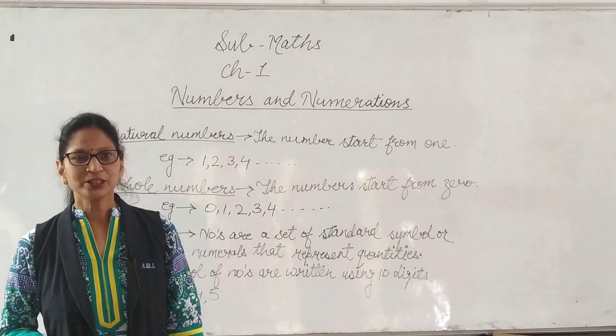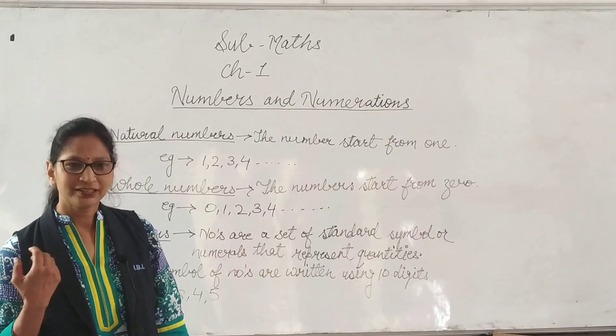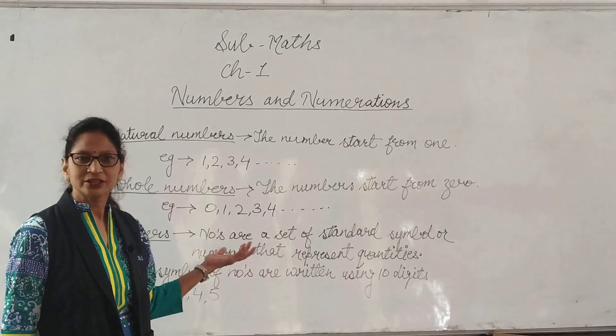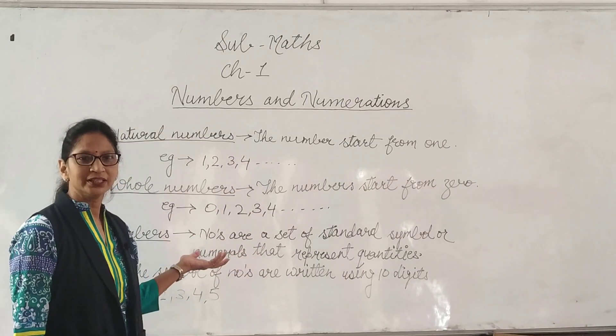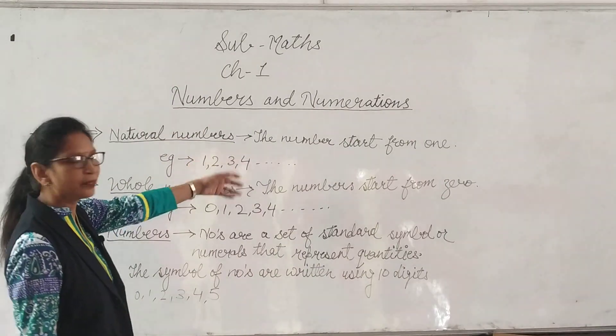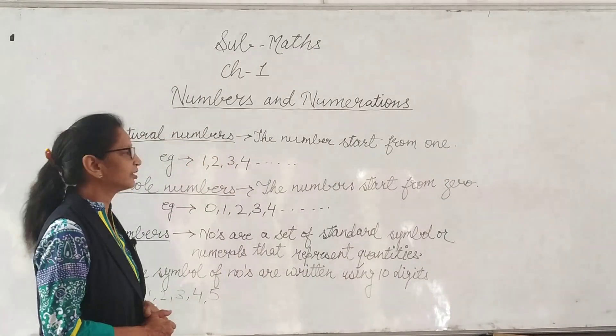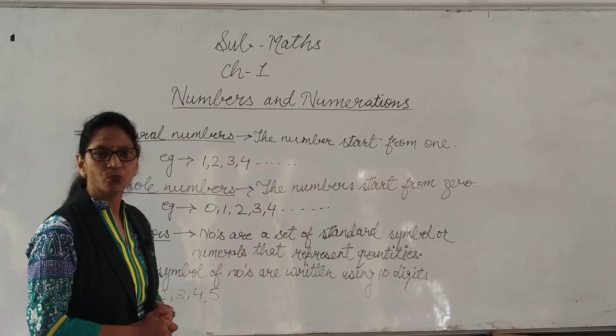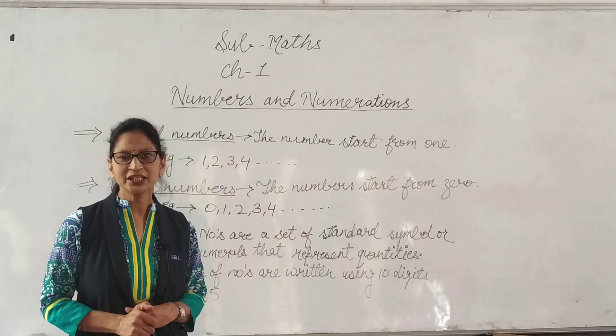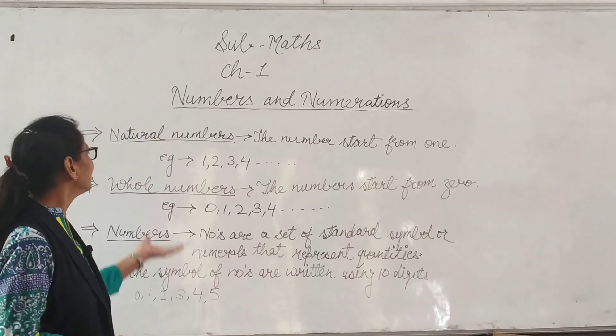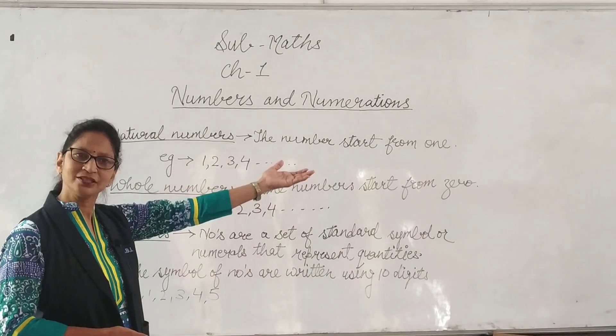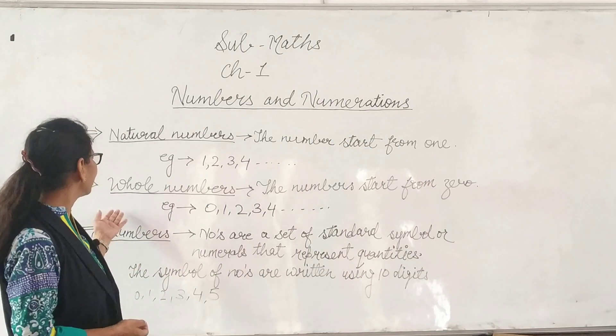We have already learnt about numbers in class 4. Let's have a quick recall what you have learnt in class 4. First is natural number. What is natural number? The number starts from 1, I call natural number. That means counting numbers are called natural numbers. Example: 1, 2, 3, 4 and so on.